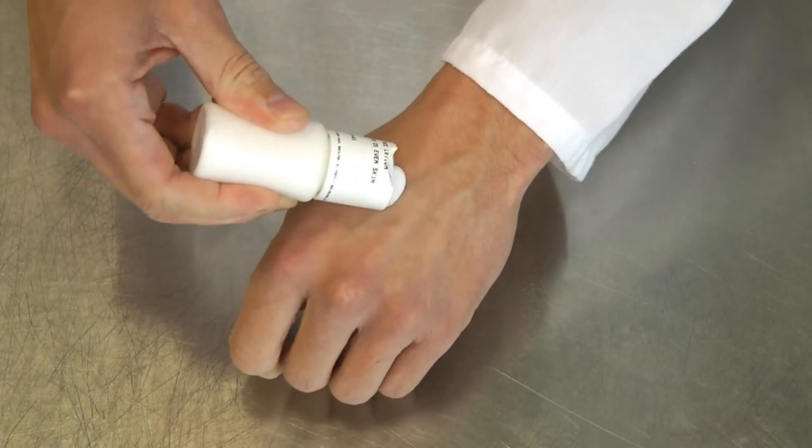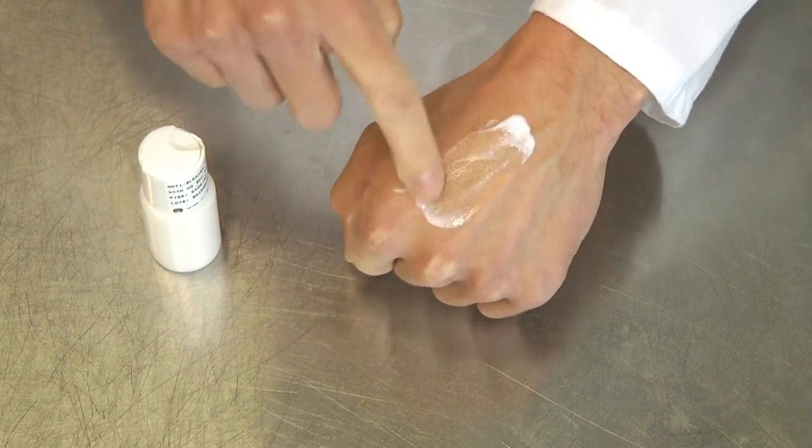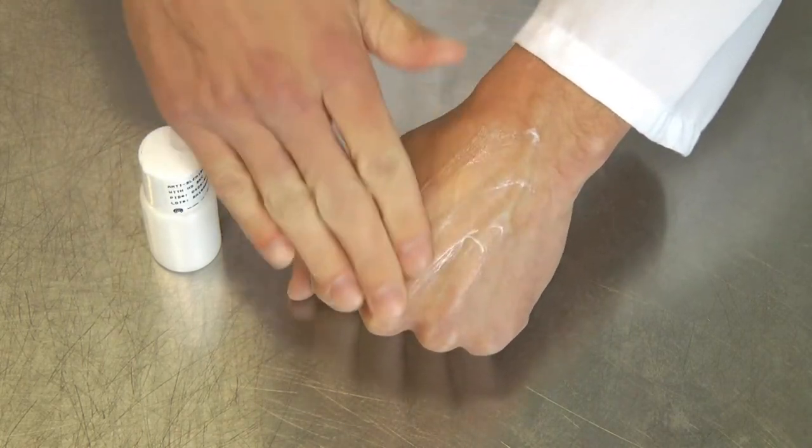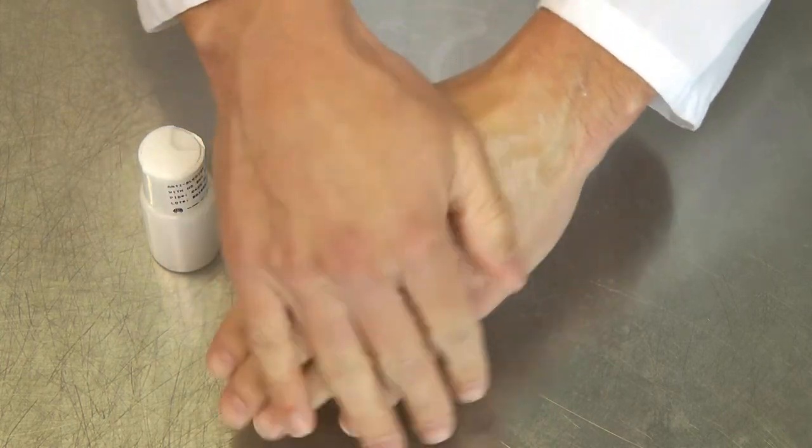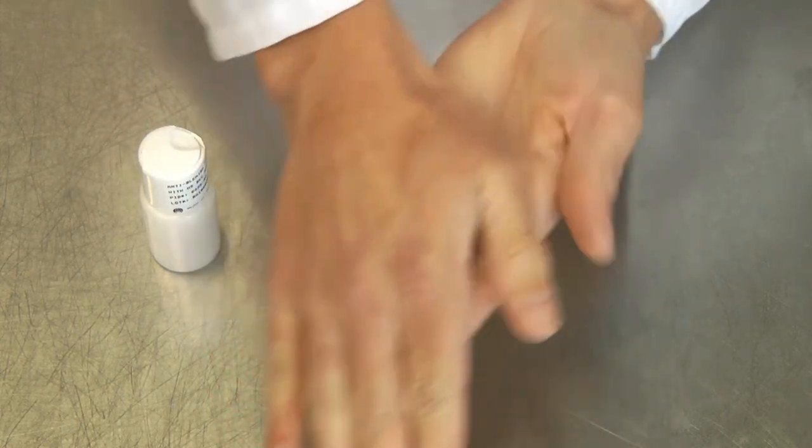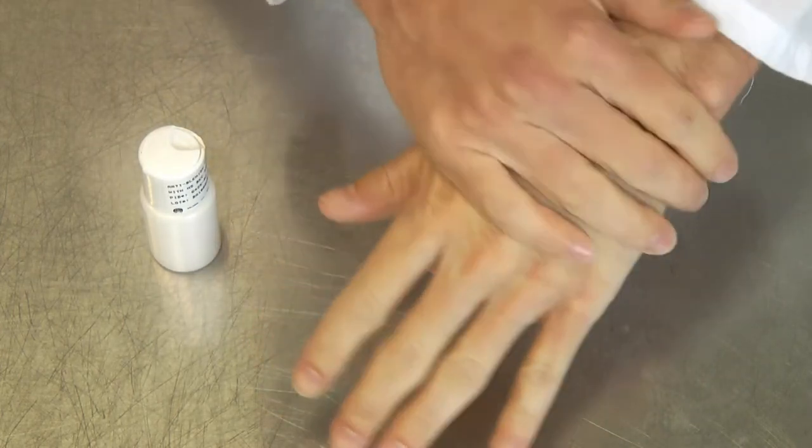Here is the application of the anti-blemish face lotion. Obviously, it would normally be used on the face, so this is being used on the hand here. Only a very small amount is needed. It absorbs very easily, and once it is absorbed, there is no tackiness or tugging. It is very smooth and hydrating.